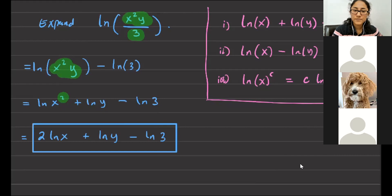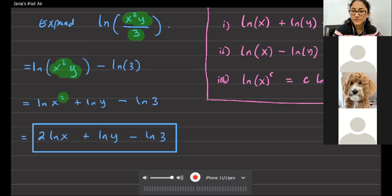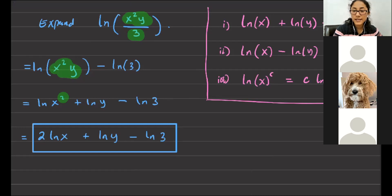To answer Charlotte's question: know how to find domain and range of rational functions and their vertical and horizontal asymptotes, but you do not need to know long division.